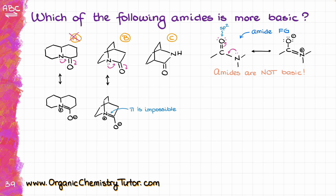That is also known as Bredt's rule, which postulates that a double bond is impossible at the bridge of a small bicyclic compound. You would need at least 8 or so atoms in that ring in order for the double bond to be stable enough for the molecule to twist and accommodate the geometry of the double bond. So here, the resonance is actually physically impossible. And since there is no resonance in this case, the nitrogen of my amide is free to accept the proton and act as a base. So molecule B is actually going to be our base — we found it.